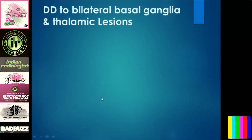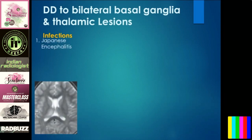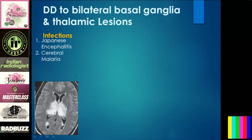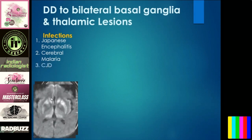Now for differentials: if you suspect an infection affecting bilateral basal ganglia and thalamus, history of fever, loss of consciousness, and altered sensorium — always think of Japanese Encephalitis, which has a vaccine now. Also consider cerebral malaria with bilateral thalamic FLAIR hyperintensity, diagnosed by blood smear looking for the parasite. Then Creutzfeldt-Jakob disease — a classical case with bilateral hyperintensities in basal ganglia and thalamus. Creutzfeldt and Jakob are two different neurologists from Germany who described this condition.